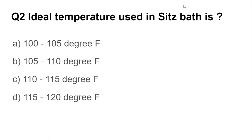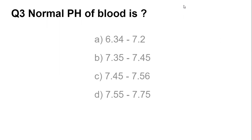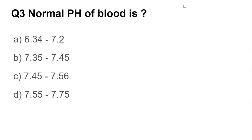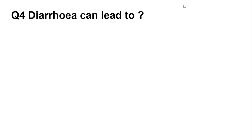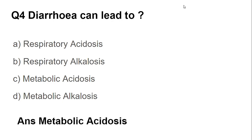Question number three: the normal pH of blood. The answer is 7.35 to 7.45, on a scale from 0 to 14. Question number four: diarrhea can lead to metabolic acidosis, because it is a primary acid-base disturbance due to either loss of acid or gain in HCO3.